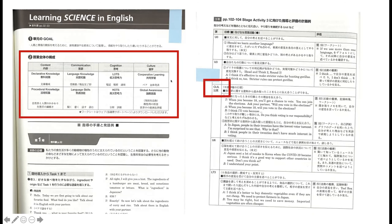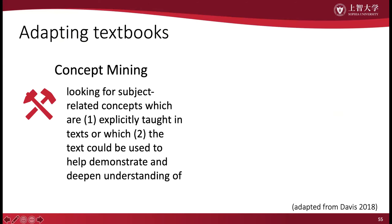It even name-drops CLIL in giving suggestions for deepening the content. However, unless CLIL is brought into the lesson with intention and an understanding of CLIL theory, it's not likely to be much more than just paying lip service to the approach. So how can we adapt textbooks to fit a CLIL approach? Matthew Davis has some good advice here — he says that it starts with concept mining.